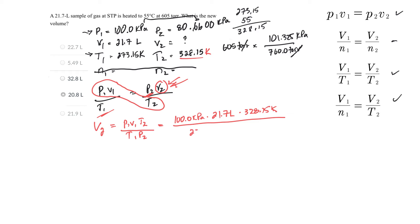times my pressure 2 is 80.66 kilopascals. Let's just check units here. Kilopascals go, Kelvins go. My final unit is liters. That's what I'm looking for. Okay, bring out the calculator. I'm going to pause and I'll do the calculation.